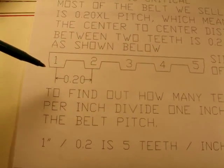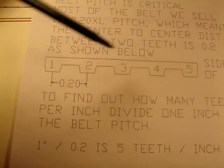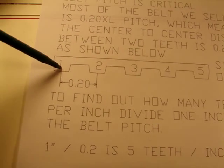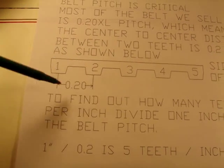This is a representation here of teeth on a belt, 5 teeth in this case shown here, but .2 inches between centers of the teeth.